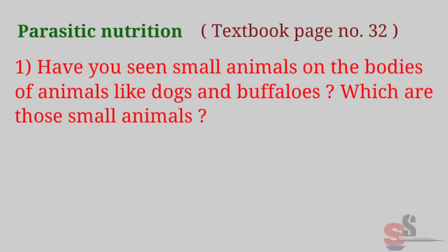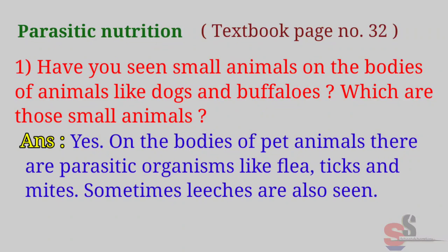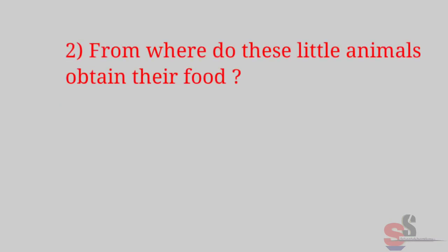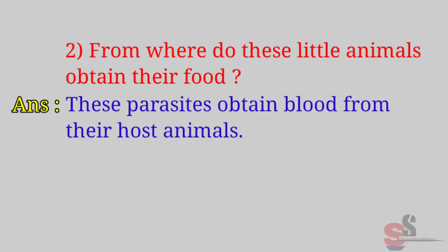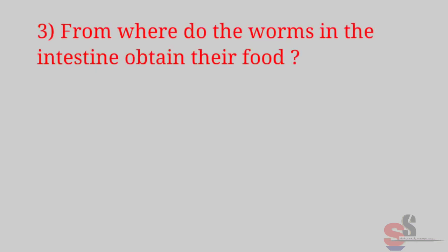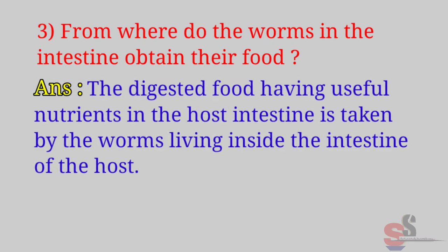Parasitic Nutrition — Textbook page 32: Have you seen small animals on the bodies of animals like dogs and buffaloes? Which are those small animals? Answer: Yes, on the bodies of pet animals, there are parasitic organisms like fleas, ticks, and mites. Sometimes leeches are also seen. From where do these little animals obtain their food? Answer: These parasites obtain blood from their host animals. From where do the worms in the intestine obtain their food? Answer: The digested food having useful nutrients in the host intestine is taken by the worms living inside the intestine of the host.